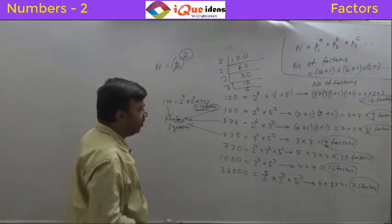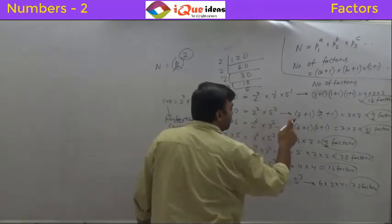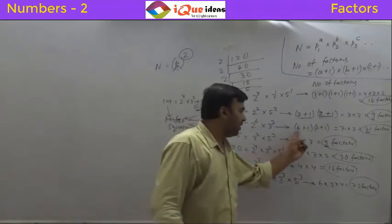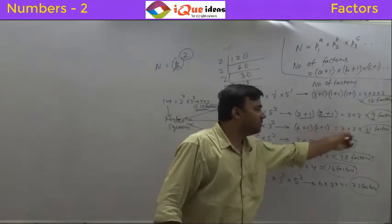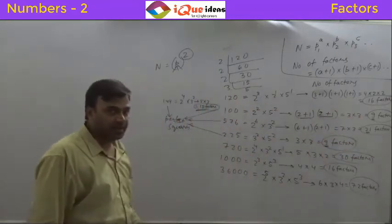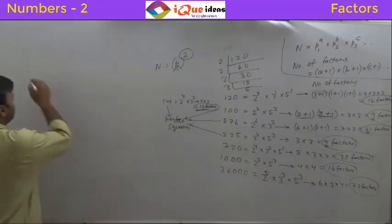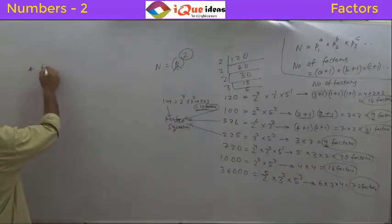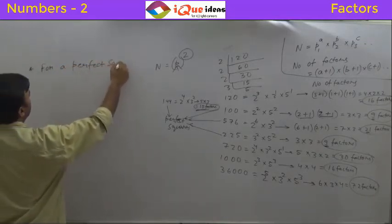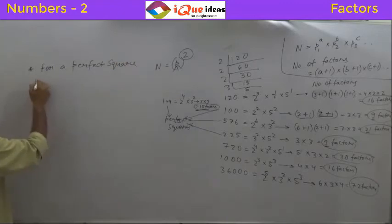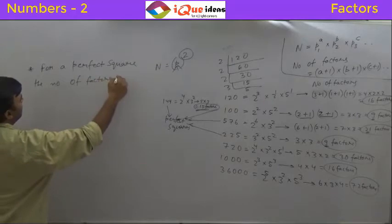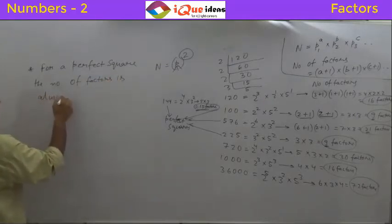When you add 1 to each of those powers, each of those values after adding 1 will become odd. Any even number, when 1 is added, becomes odd. Now, when you multiply odd numbers, the outcome will always be an odd number. Hence, the number of factors will always be odd. So, for a perfect square, the number of factors is always odd.